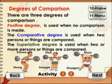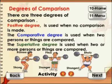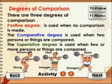Degrees of comparison. There are three degrees of comparison. Positive degree is used when no comparison is made. The comparative degree is used when two persons or things are compared. The superlative degree is used when two or more persons or things are compared. Some examples are given below for your reference.